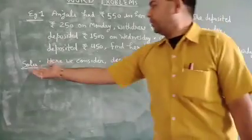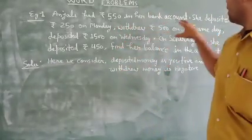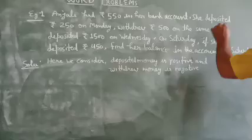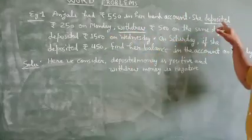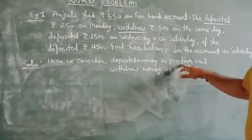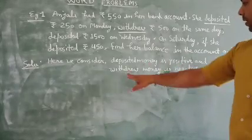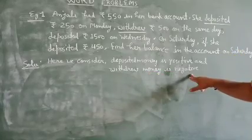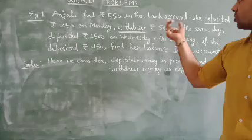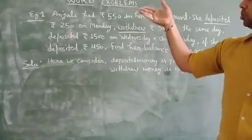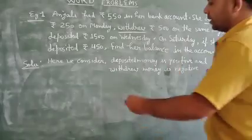Let's start the solution. Here we consider two parts: deposit and withdrawal. So deposit has a positive sign integer, and withdrawal money has a negative sign. When you withdraw money it is negative, and deposit money is positive.